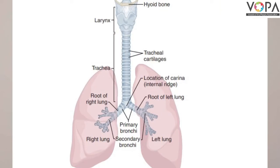The third point is the wind pipe. The wind pipe is swollen at the beginning due to the sound box. The wind pipe bifurcates in the thorax — one branch enters the right lung and the other enters the left lung.